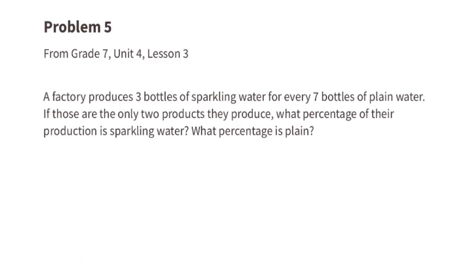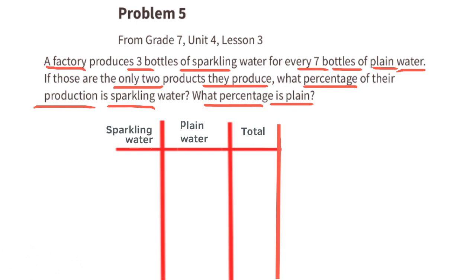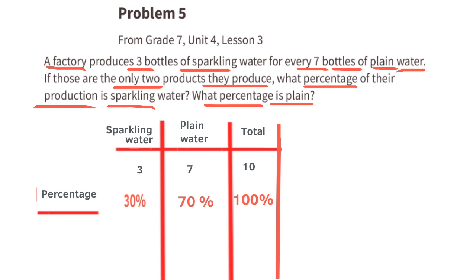Problem number 5 from 7th grade unit 4 lesson 3. A factory produces 3 bottles of sparkling water for every 7 bottles of plain water. If those are the only two products they produce, what percentage of their production is sparkling water and what percentage is plain water? For every 3 bottles of sparkling water there are 7 bottles of plain water — that's a total of 10 bottles. 3 out of 10 is equivalent to 30 out of 100, which is 30%. So 30% of their production is sparkling water and 70% is plain water.